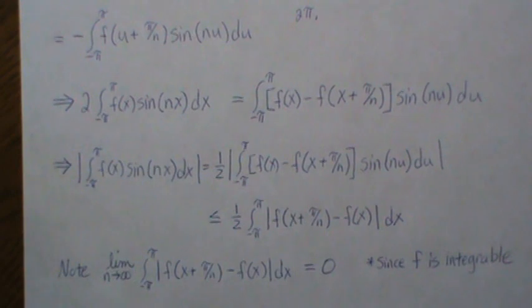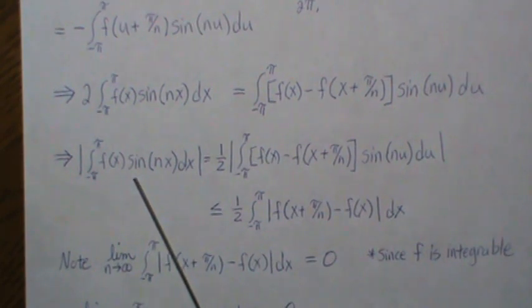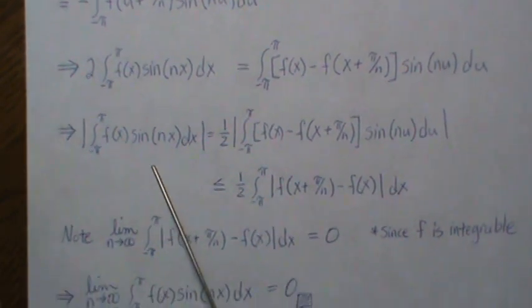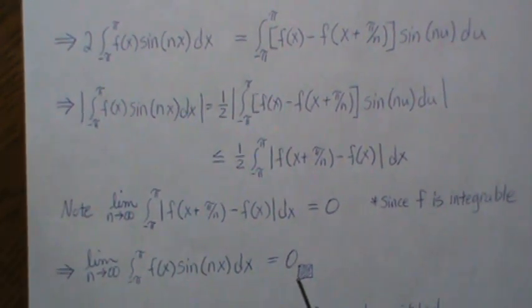Now what does that mean? That says that this here goes to zero, so the limit of this goes to zero, and that's what we wanted to show—that the limit of this coefficient goes to zero.